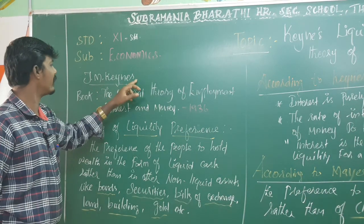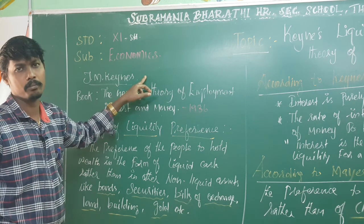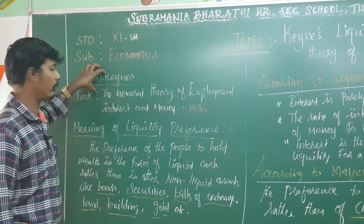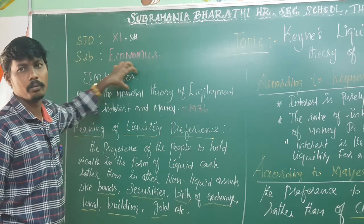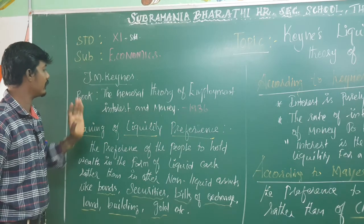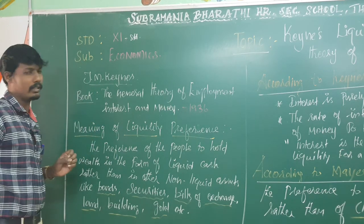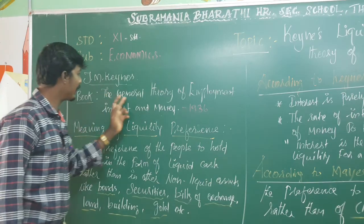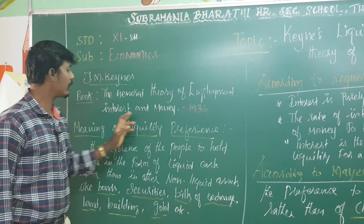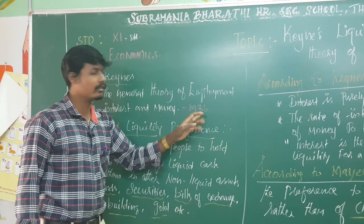Who is J.M. Keynes? He is the father of modern macroeconomics. His famous book is 'The General Theory of Employment, Interest and Money', published in 1936.